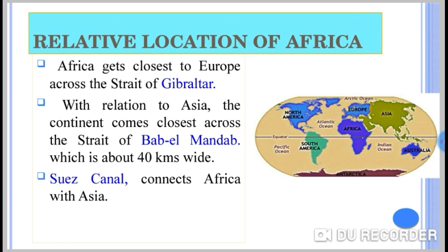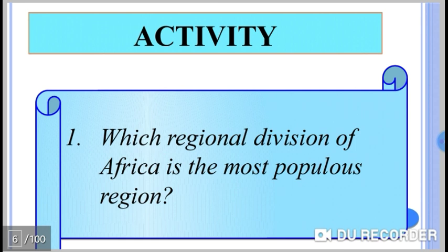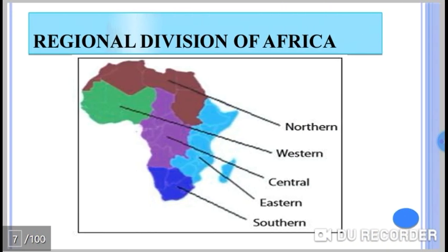Activity question: Which regional division of Africa is the most populous region? The answer is that the northern, southern, eastern, western, and central parts of Africa are the most populous regions. Africa has northern, western, central, eastern, and southern divisions, and we will describe each region in terms of population and economic activities.